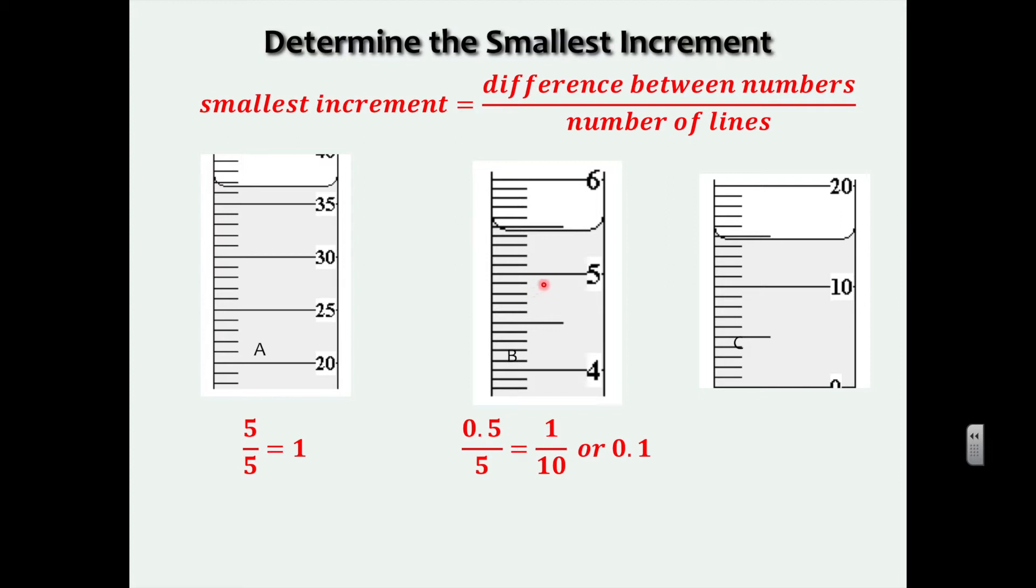Now for the next one, the difference between the two numbers, you could either be from 5 to 5.5, and that's where this 0.5 comes from, and the number of lines is 1, 2, 3, 4, 5. Or you could have done the difference between 5 and 6. So that would have been the difference between 5 and 6 is 1, and then there are 10 lines in between 5 and 6. So 1 divided by 10 is going to be 1 tenth or 0.1. So each line is worth 0.1.